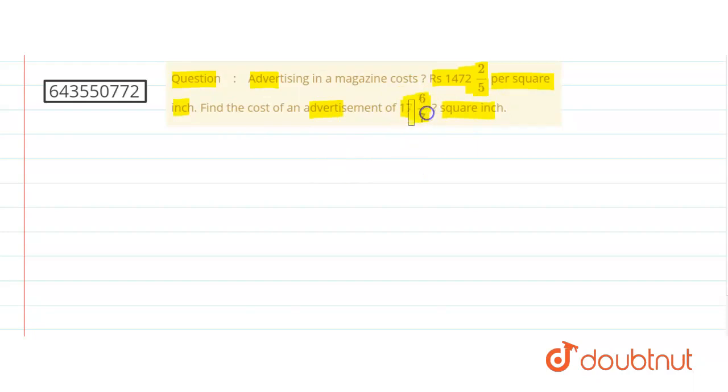And the rate is 1472 2/5. We can write this as 1472, the rate is simply 7362/5 per square inch.